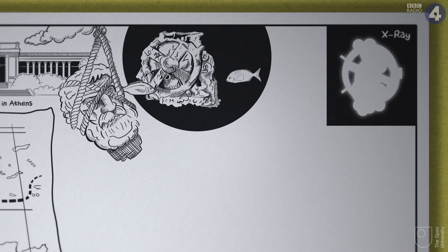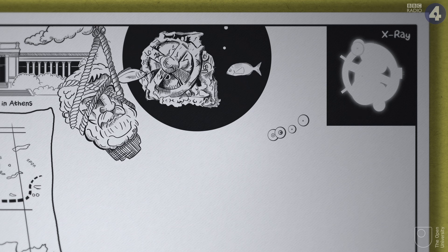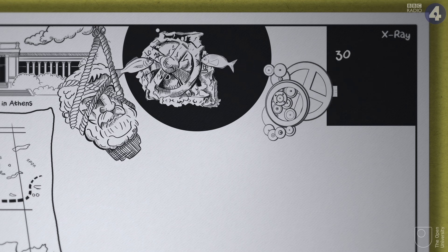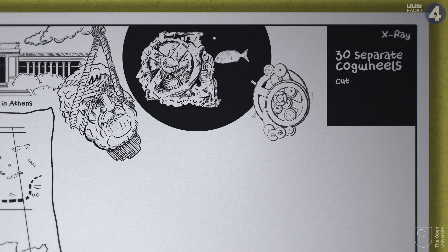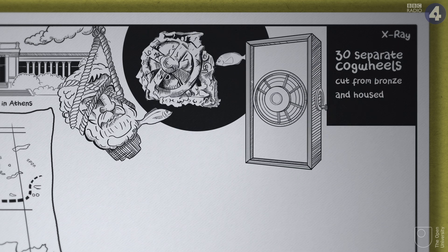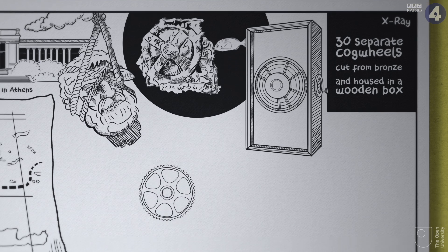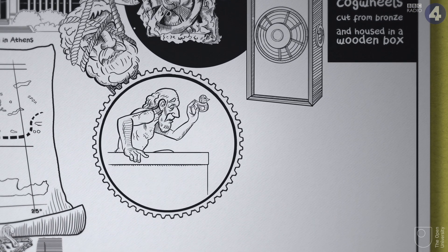The fragments were what was left of a mechanism that had consisted of at least 30 separate cogwheels cut from bronze and housed in a wooden box. It was a sophisticated portable clockwork machine from the time of Archimedes.